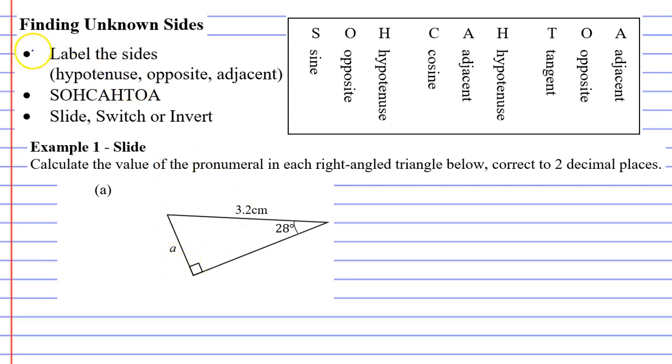You'll notice three dot points that basically tell you what you need to do and in what order to solve these. So the first dot point says to label the sides as hypotenuse, opposite and adjacent.